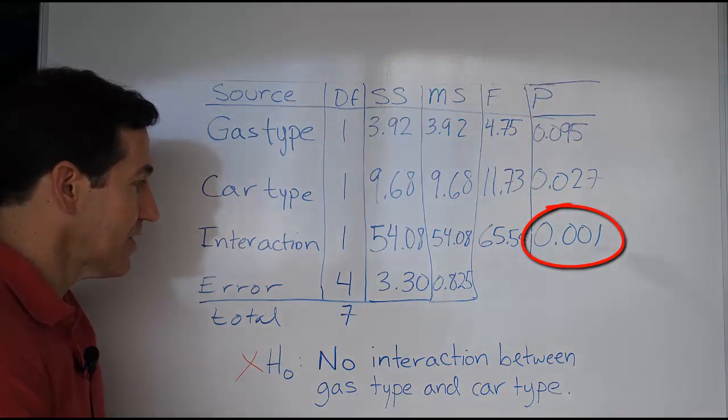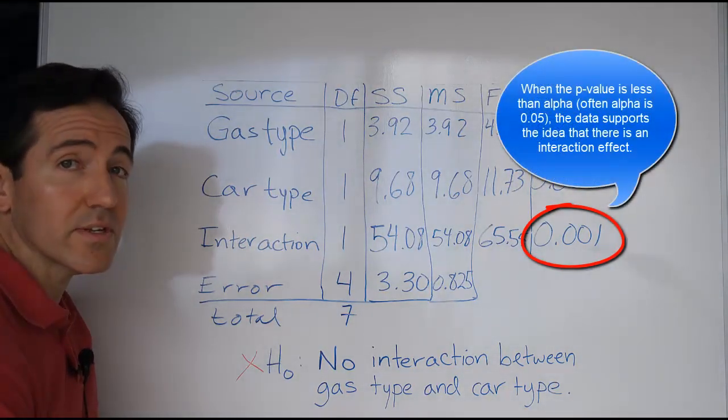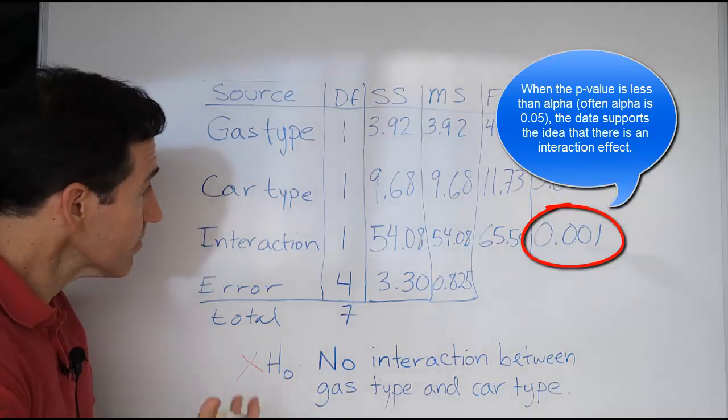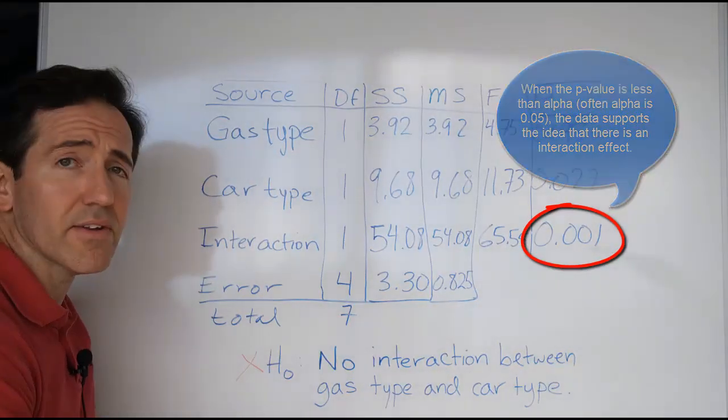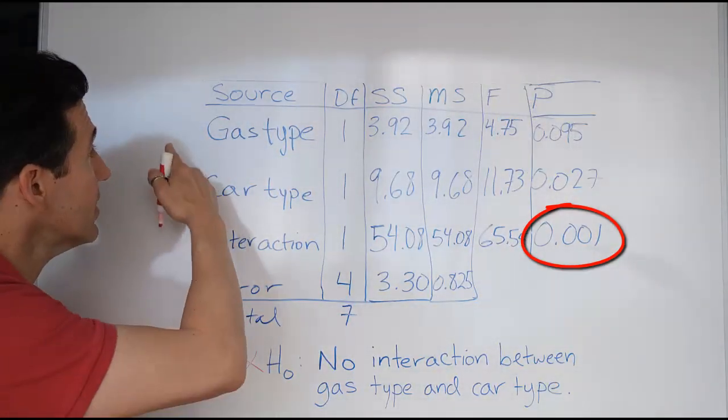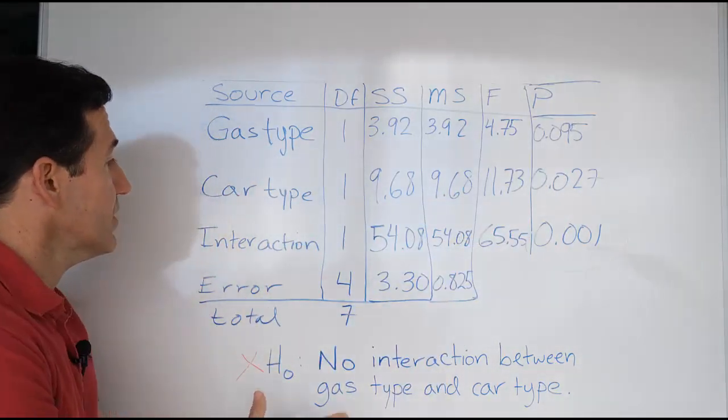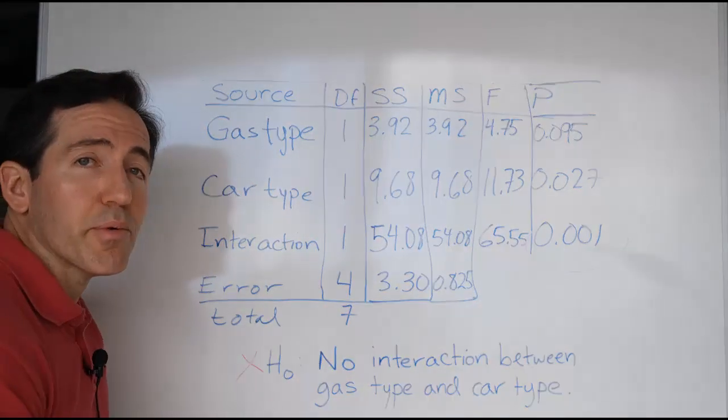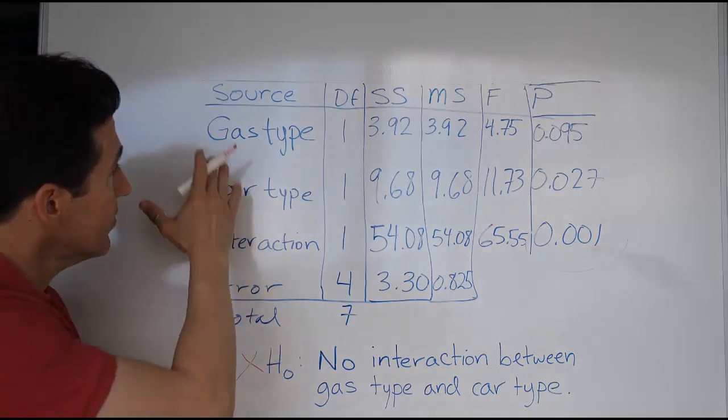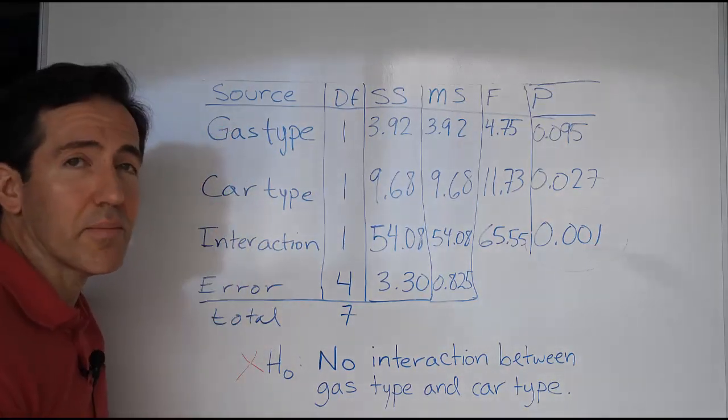We're going to reject the idea that there's no interaction, which means we're going to assume there is an interaction. And because this data supports the idea that there's interaction, we should not look at these p-values here. We should move on to a multiple comparison procedure to look at these things paired up together to find the best pairing.